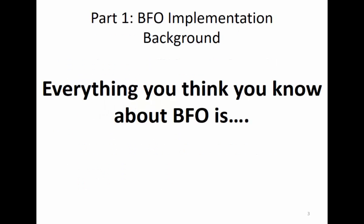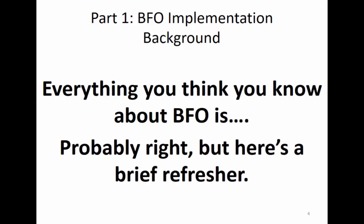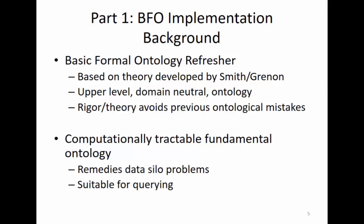So everything you thought you knew about BFO is probably right. Basic formal ontology is based on a theory developed by Smith and Grenning. It's an upper level domain neutral ontology. Basically you get things - you get a smaller sub-ontology, a low level or material ontology - you put those into this bigger upper level framework and translate the domain level stuff into this upper level stuff. That way, all of these domain level ontologies can talk to each other. This solves things like data silo problems, makes it queryable, and as long as it's formulated with rigor according to the principles laid down by Smith and Grenning, you don't run into the weird mistakes that previous ontological ventures had encountered.